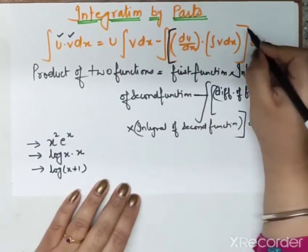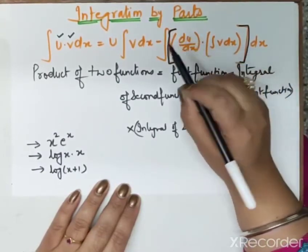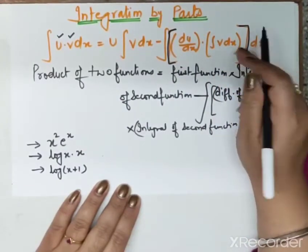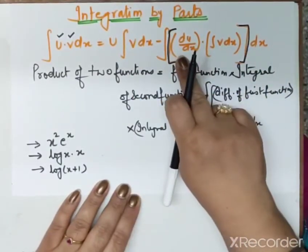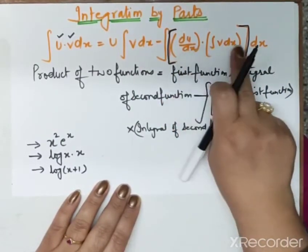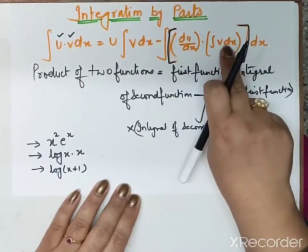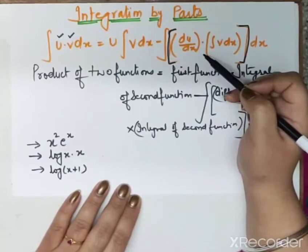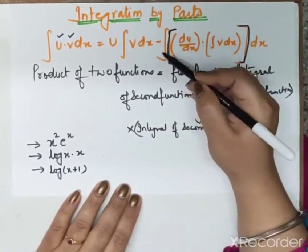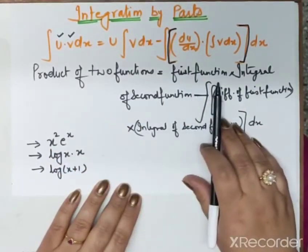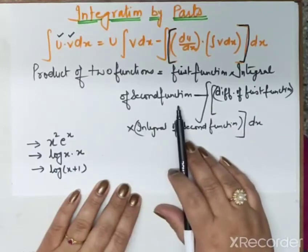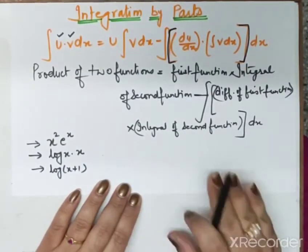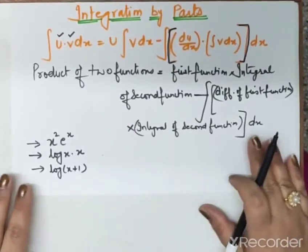If we have two functions u and v that are multiplied together and we need to find their integration, then for such a product the formula is: first function as it is × integration of second function, minus integration of [derivative of first function × integration of second function]. So we apply integration three times in this formula.